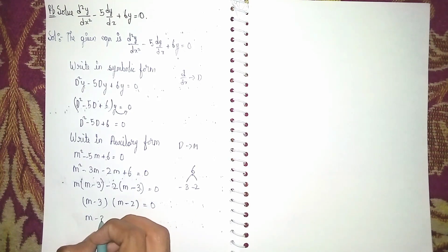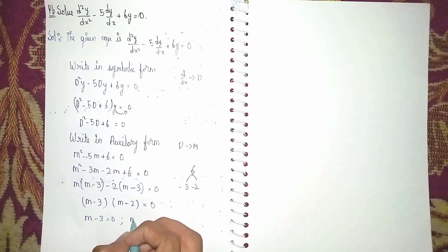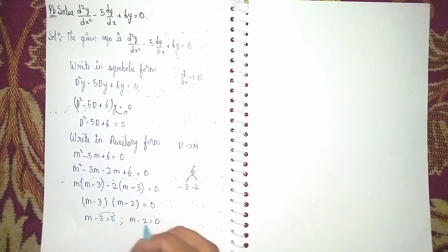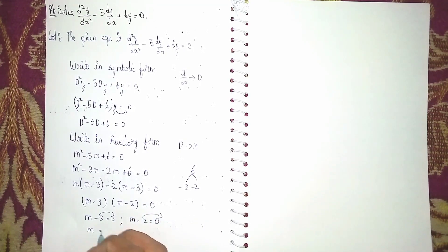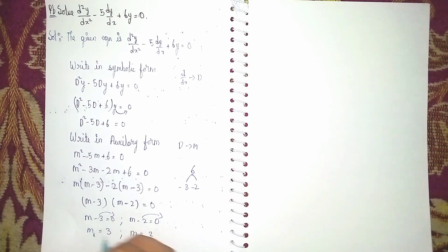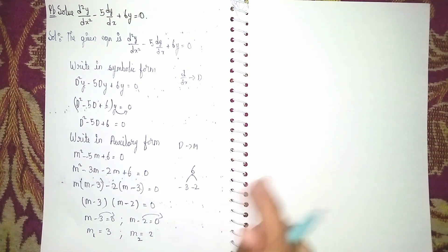Now separately equating each factor with zero: m minus 3 equals 0 gives m equals 3, and m minus 2 equals 0 gives m equals 2. These are our roots m1 and m2.